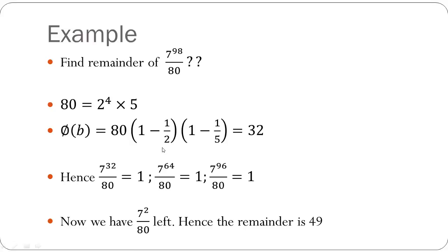Now we are left with 7 raised to 2, because after you have used up 7 raised to 96 from 7 raised to 98, 7 raised to 2 is left. Hence we have to find the remainder when 7 square is divided by 80. Hence our remainder is 49.